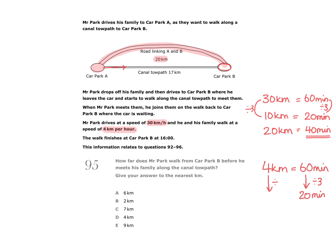That means I will do the same to the distance. 4 divided by 3 gives a recurring decimal of 1.333 recurring, or in other words 1.3 kilometres. So after 20 minutes, the family will have walked 1.3 kilometres, and that means that after 40 minutes the family will have walked twice that amount — 2.6 kilometres. That's when Mr Park starts walking. So by the time he starts walking, the family have already covered 2.6 kilometres of the 17-kilometre journey.